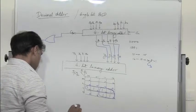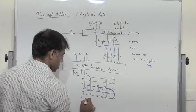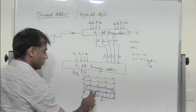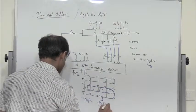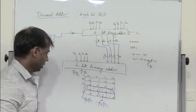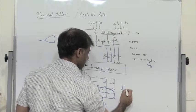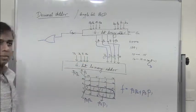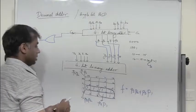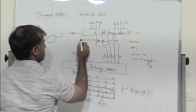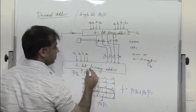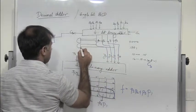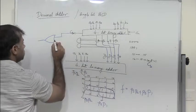Grouping the 1s in the Kmap: combining the four 1s in one group gives p3·p2, and combining the other four 1s gives p3·p1. So the minimized logic function for when we need to add 6 (from the 10–15 range) is p3·p2 + p3·p1.